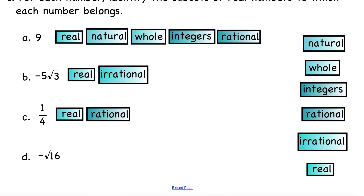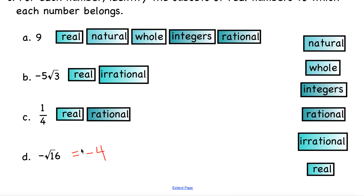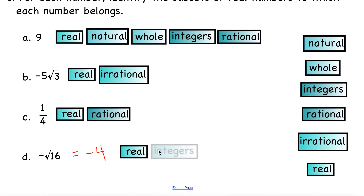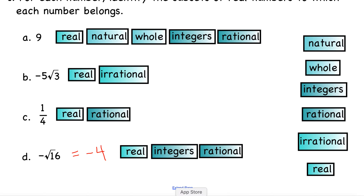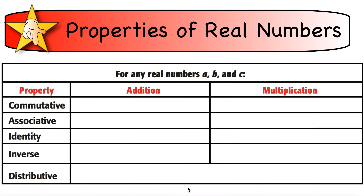Letter D is a little tricky. You always need to check to see if you can simplify these. This is actually equal to negative 4 — if we simplify the square root of 16, that simplifies to negative 4. So now we know that's a real number. It's not a natural number or a whole number, but it is an integer because it's negative, and it's also a rational number. That's how you classify numbers according to the subsets of the real number system.